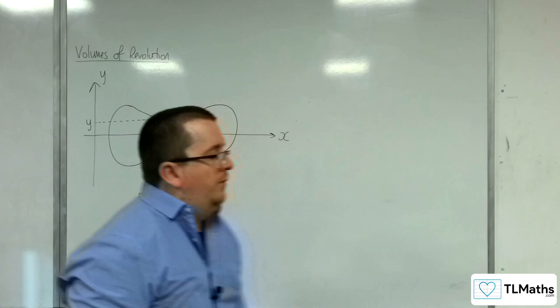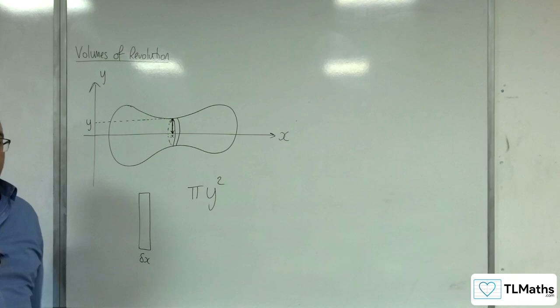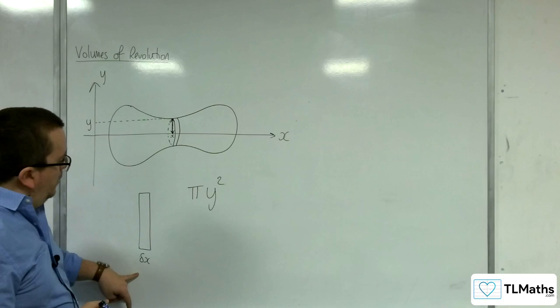So that would mean that the area of the cross section, the area of the circle, would be given by pi times the radius squared, which in this case is y. So pi y squared. And to get the volume of my cylinder, I would need to multiply that by delta x.